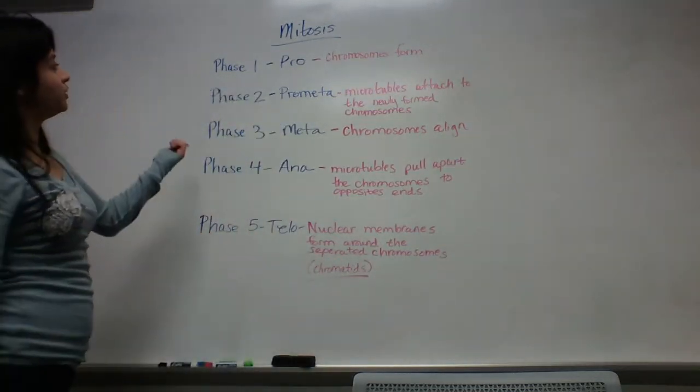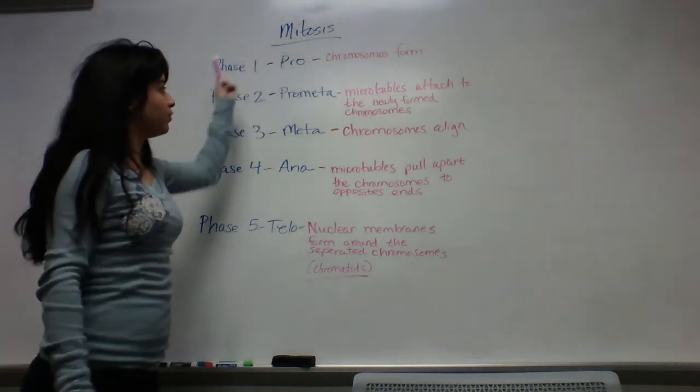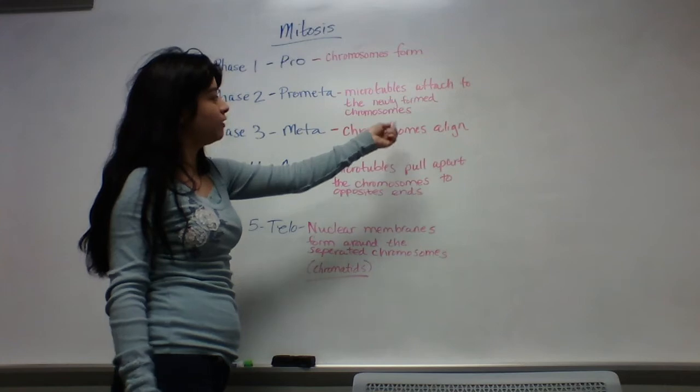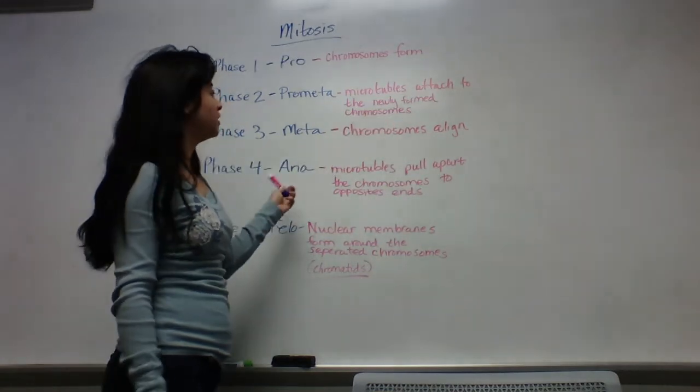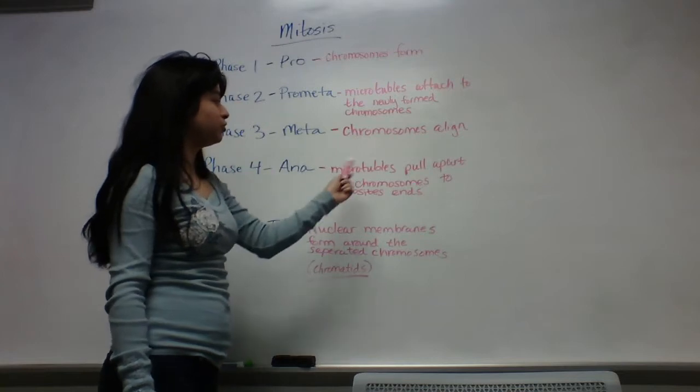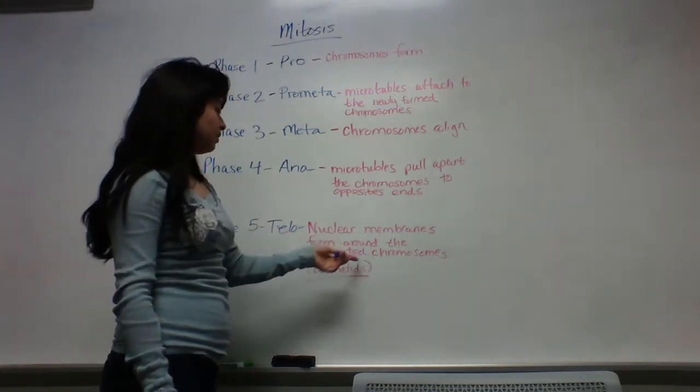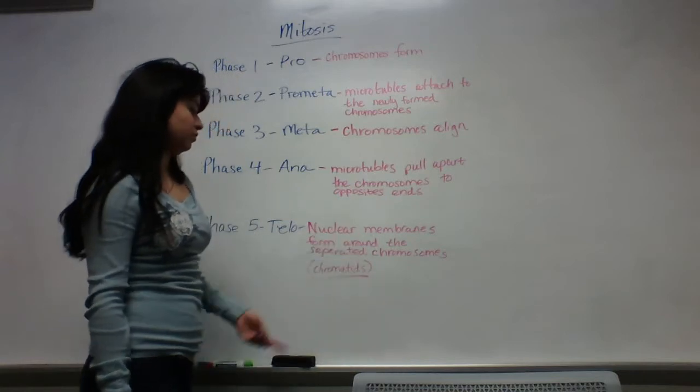So in words, pro, which is phase 1, in pro chromosomes form. In prometa, microtubules attach to the newly formed chromosomes. In meta, chromosomes align. Ana, microtubules pull apart the chromosomes to opposite ends. And in telo, nuclear membranes form around the separated chromosomes, which are now chromatids.